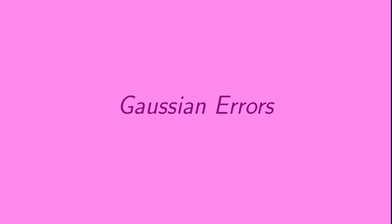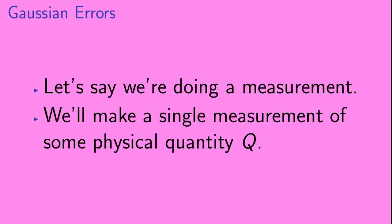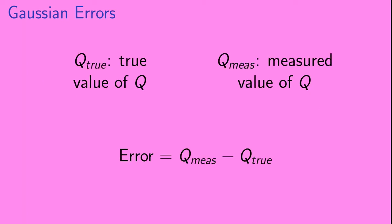Let's give a quick review of Gaussian errors. Let's say we're doing a measurement — we're going to make a single measurement of some physical quantity, which we're going to call q. We're going to call the true value of q, q-true, and the measured value of q, q-measured. Since measurements are not perfect, in general q-measured is not going to equal q-true, and the error is equal to the difference between them: q-measured minus q-true.